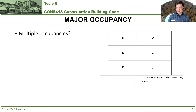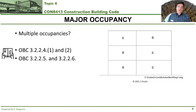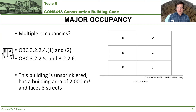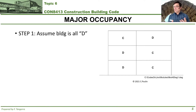Here's an example: there's a three-story building with two different occupancies — C and D. Before we jump into figuring that out, I recommend you check out the articles and sentences indicated in your course notes, as they cover a number of items we'll be addressing shortly. Let's pretend the building has a building area of 2,000 square meters, is unsprinklered, and faces three streets. How do we determine the major occupancy and its effects on the fire resistance rating of the building's walls, floors, and roofs?